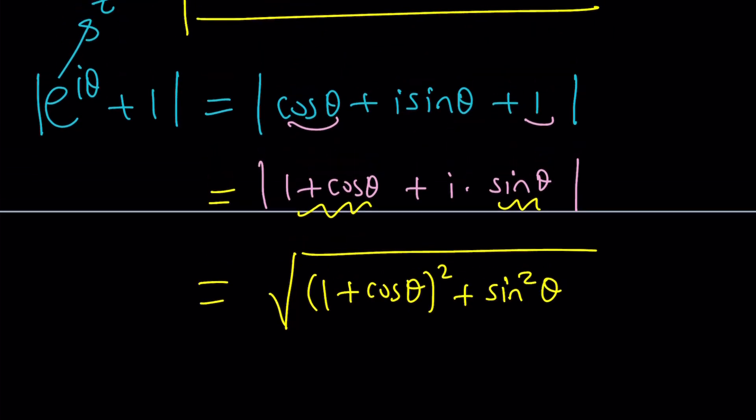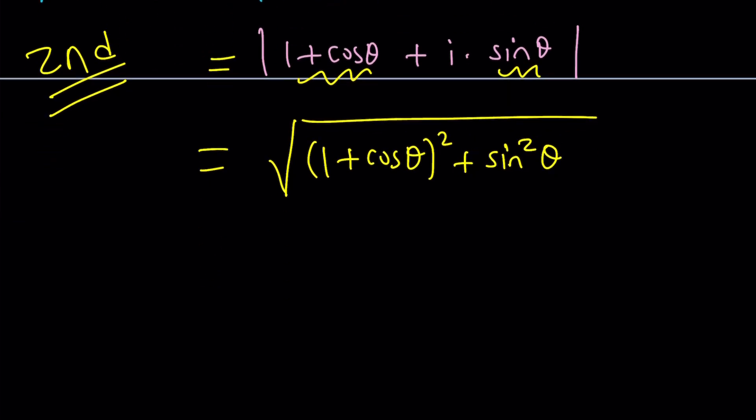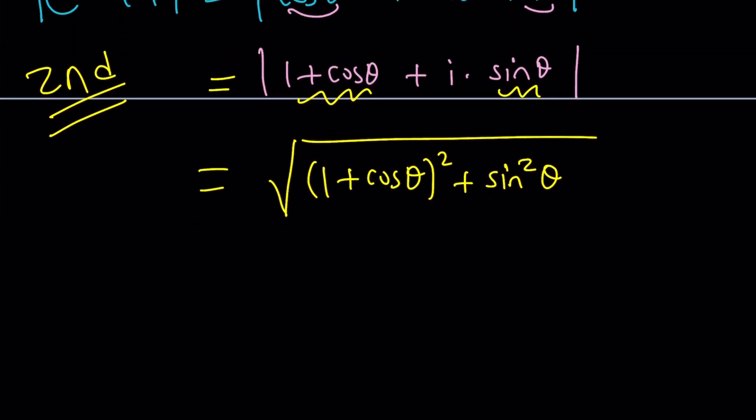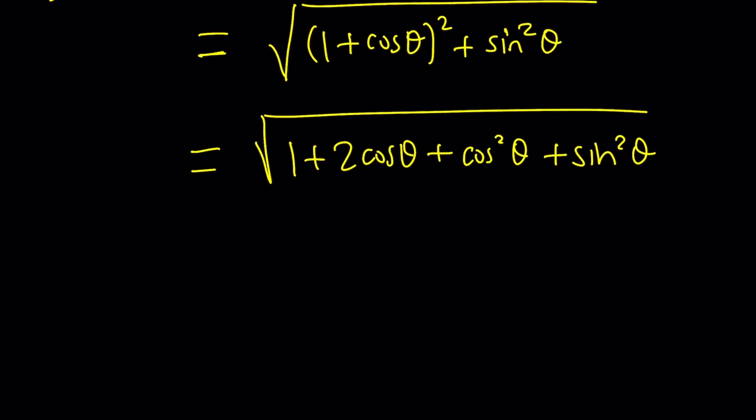Oh, by the way, I forgot to write this. This is the second method. And now we'll do the first method second. I'm confusing myself here. So how do you simplify this? Let's expand it. One plus two cosine theta plus cosine squared theta plus sine squared theta. Do you see what I see? Sine squared plus cosine squared equals one. Isn't that amazing?